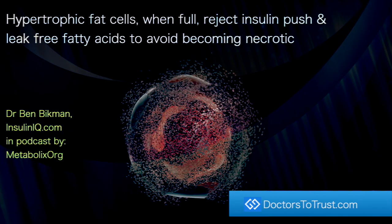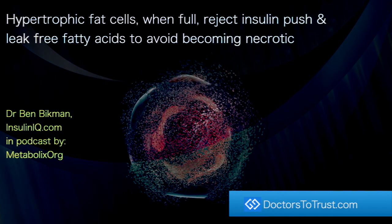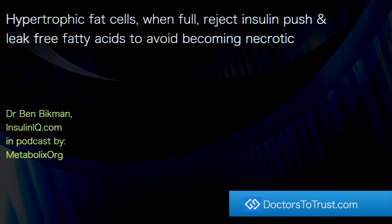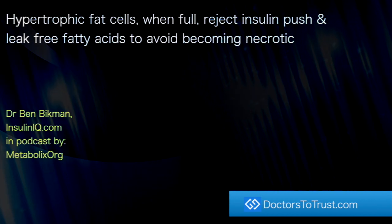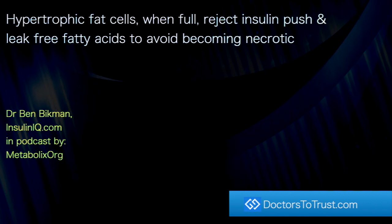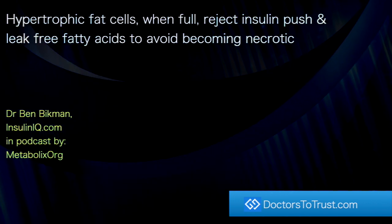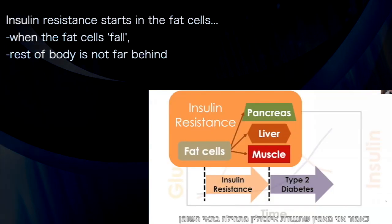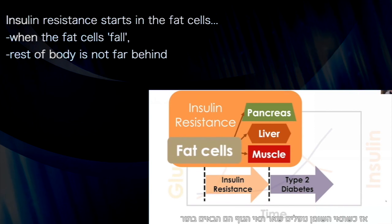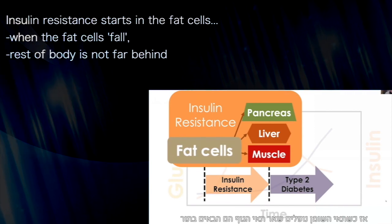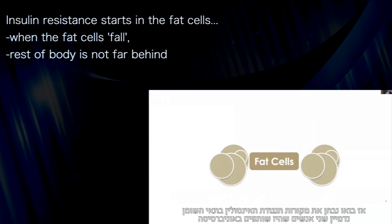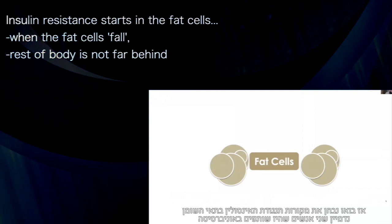Hypertrophic fat cells, when full, reject insulin's push and leak free fatty acids to avoid becoming necrotic. Dr. Ben Bickman explains that insulin resistance starts in the fat cells — so when the fat cells fall, the rest of the body isn't far behind. Let's take a moment and explore the origins of insulin resistance at the fat cell.